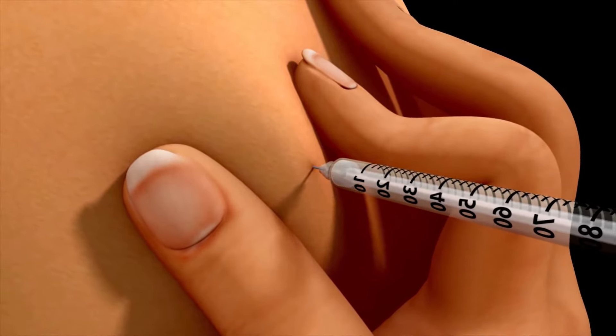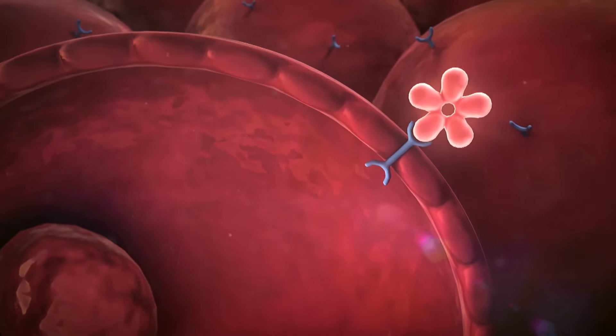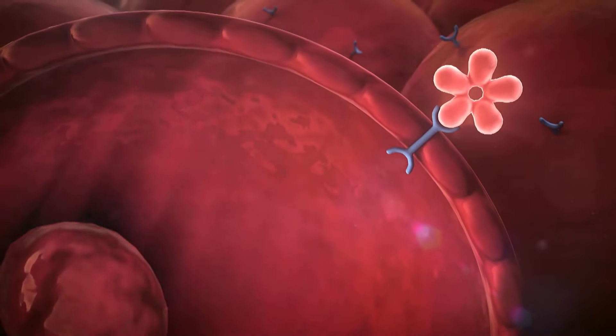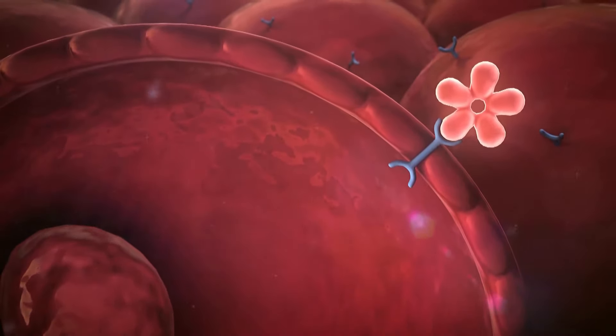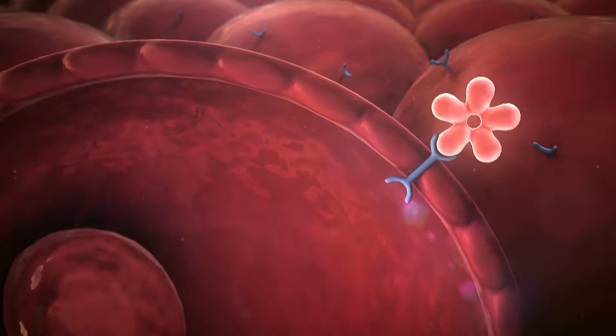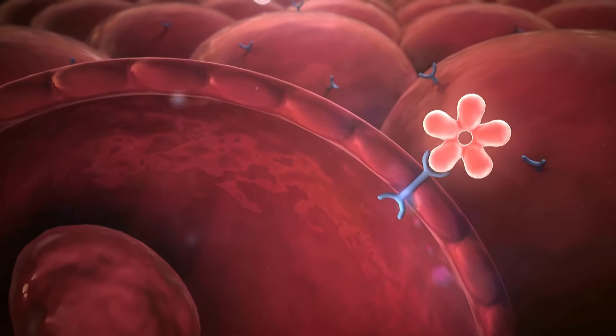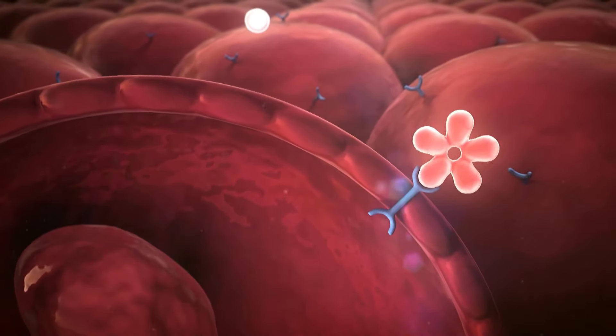Type 2 diabetes is caused by a condition called insulin resistance. That is when the insulin binds to the receptors, but the cells ignore the insulin. Therefore, glucose cannot enter the cells. The causes of this condition are not well known.